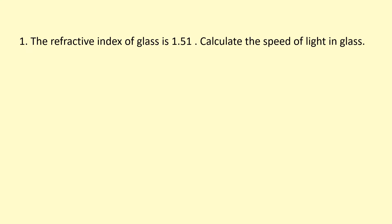In this question, we're told the refractive index of glass is 1.51. Calculate the speed of light in glass. So I'm going to use this equation here. So I've got the refractive index of glass, 1.51, equals the speed of light in vacuum over the speed of light in glass.